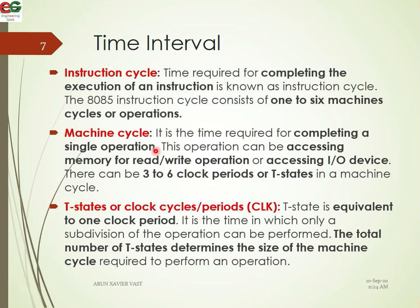This operation can involve accessing memory for reading or writing, or accessing IO devices for read or write. There can be three to six clock periods or T-states in one machine cycle. One machine cycle contains three to six clock periods, and one complete operation is the machine cycle.